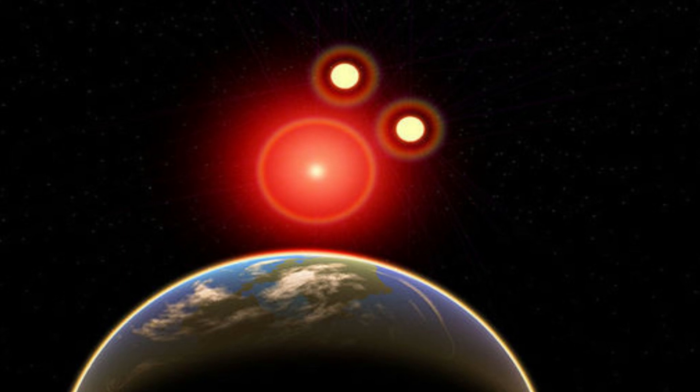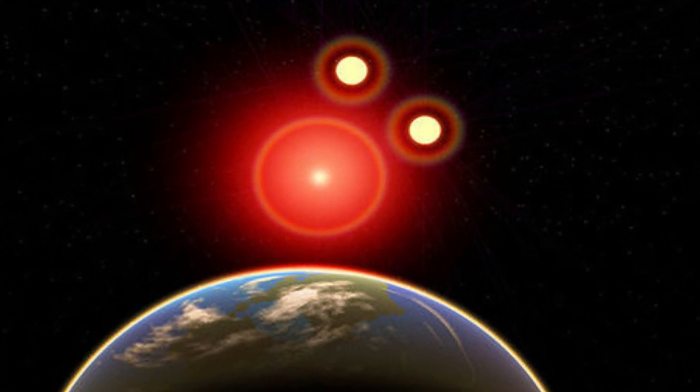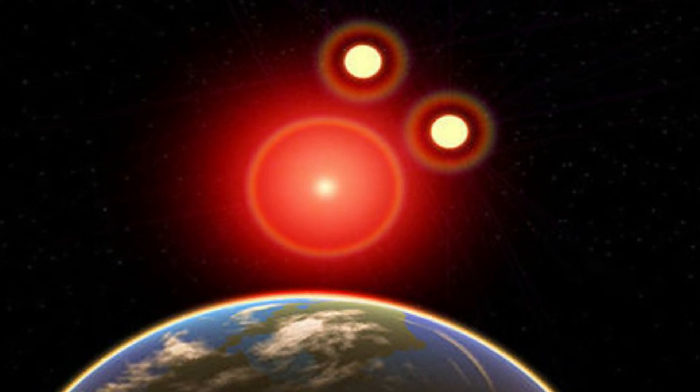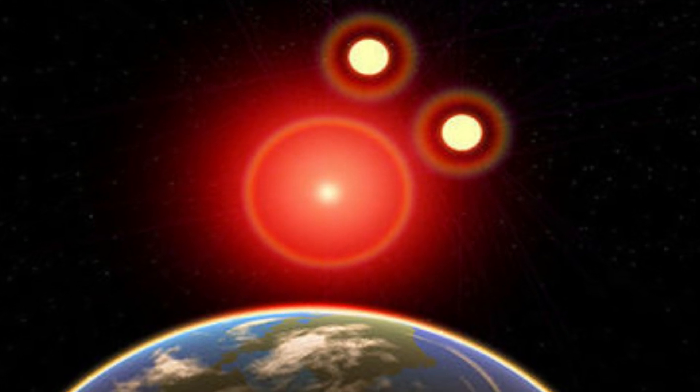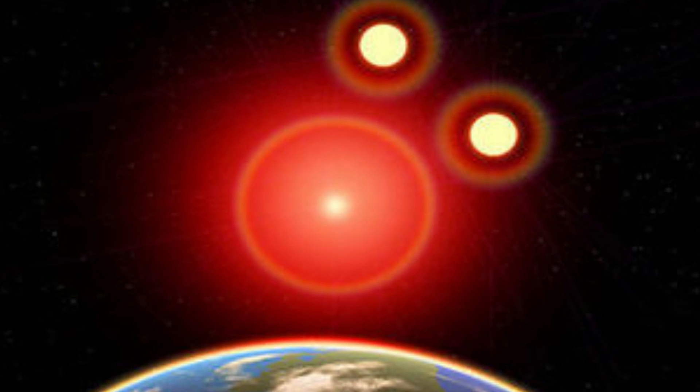Proxima b's star, Proxima Centauri, is a violent red dwarf, prone to violent solar flares and intense radiation that could strip a planet's atmosphere away. Any life there would need to adapt, perhaps even evolve, to harness these harsh conditions.